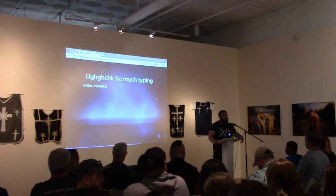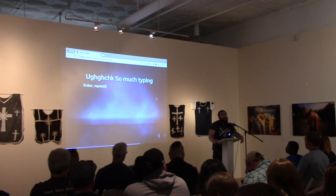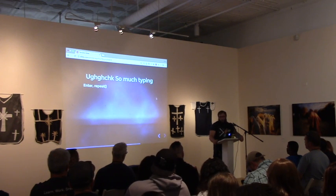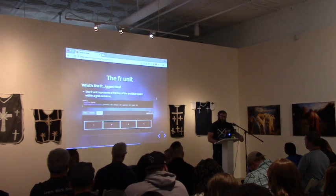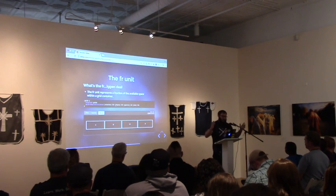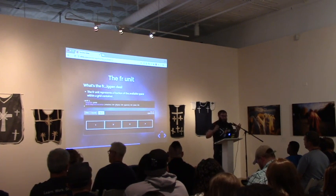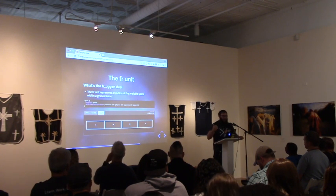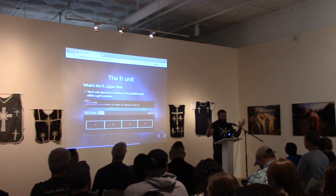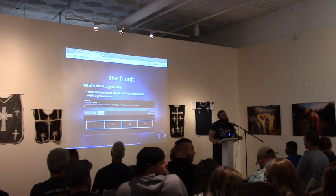A question comes up: how is the FR unit different from percentages? The FR unit is similar, but you can set 1fr, 2fr, and have it be fractionally proportionate to the grid as a whole. The key difference is that the fraction represents remaining space, whereas a percentage would be of the total space. So the algorithm behind it just detects how big each column would be relative to the remaining available space.